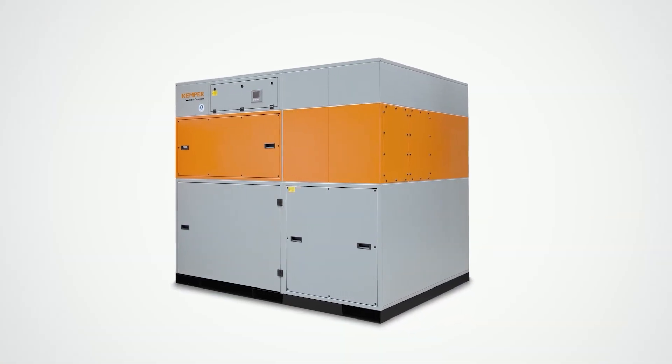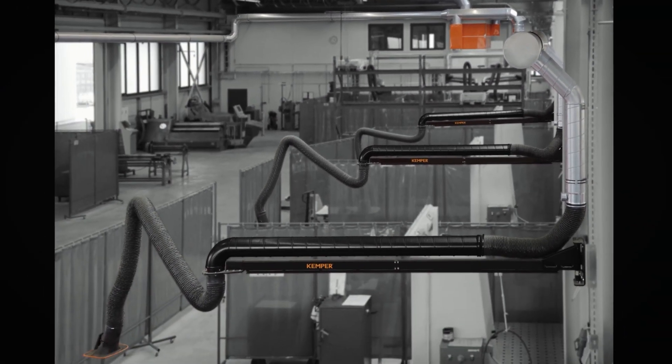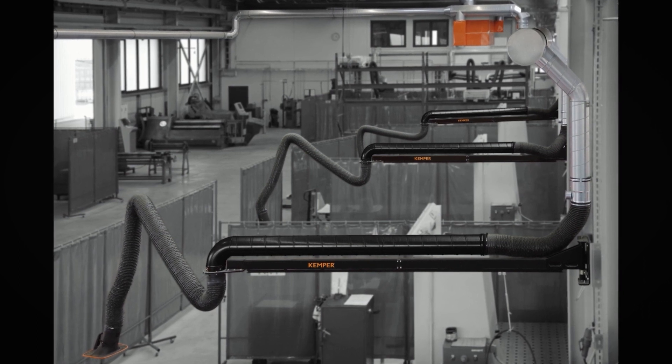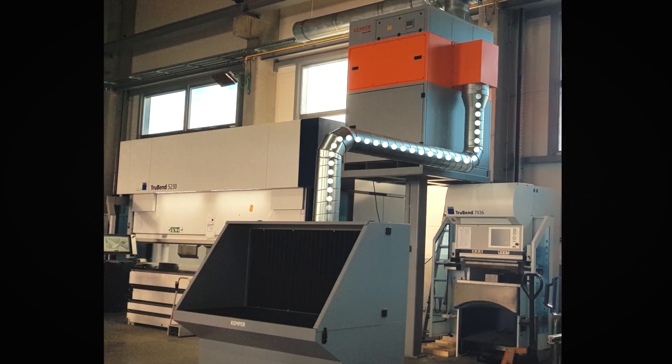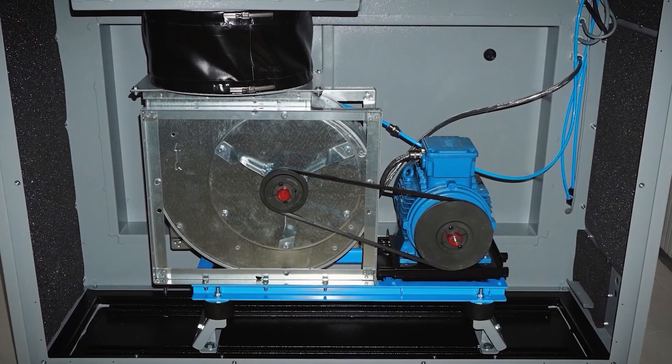Here's how the suction and filter unit works: Connect the plant with the extraction elements, which may be extraction arms, hoods, or tables. The motor and fan are exceptionally energy-efficient and run quiet as a whisper.